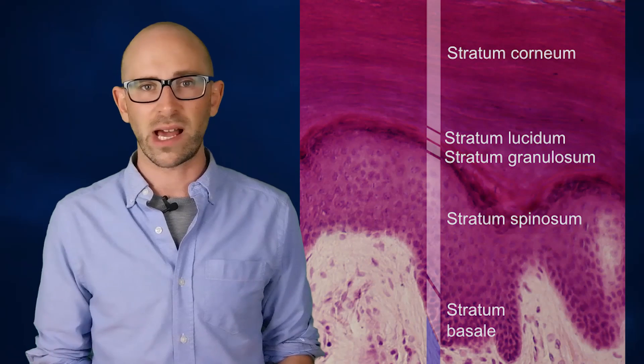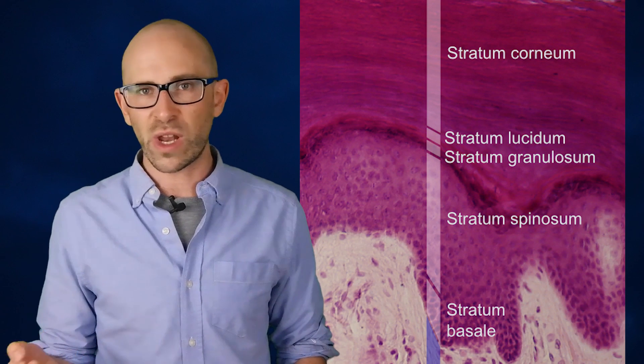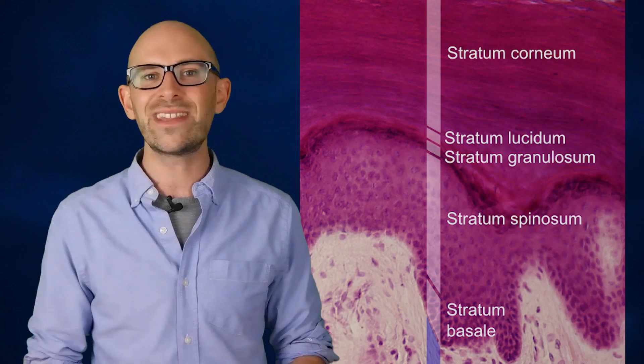Starting from the deepest layer and working out, there is the stratum basale, the stratum spinosum, the stratum granulosum, the stratum lucidum, and the stratum corneum. The stratum lucidum is that extra friction-induced layer that helps make your skin thick in those areas that require it.